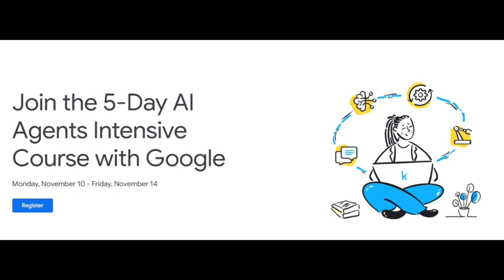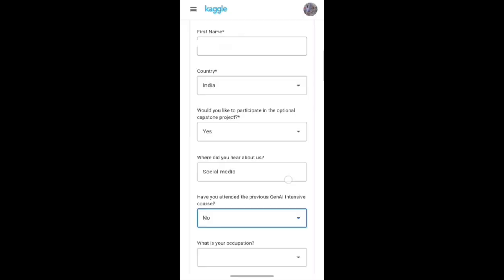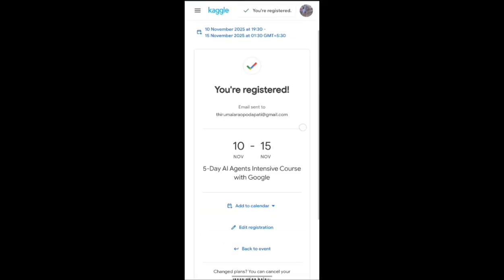Let's talk about the registration process. The link is in the description, so just click it and click on the register button. You have to follow two steps to complete the registration: step one is to register your email, and step two is to fill in your details as shown on the video and submit. That's it — your registration process is completed.